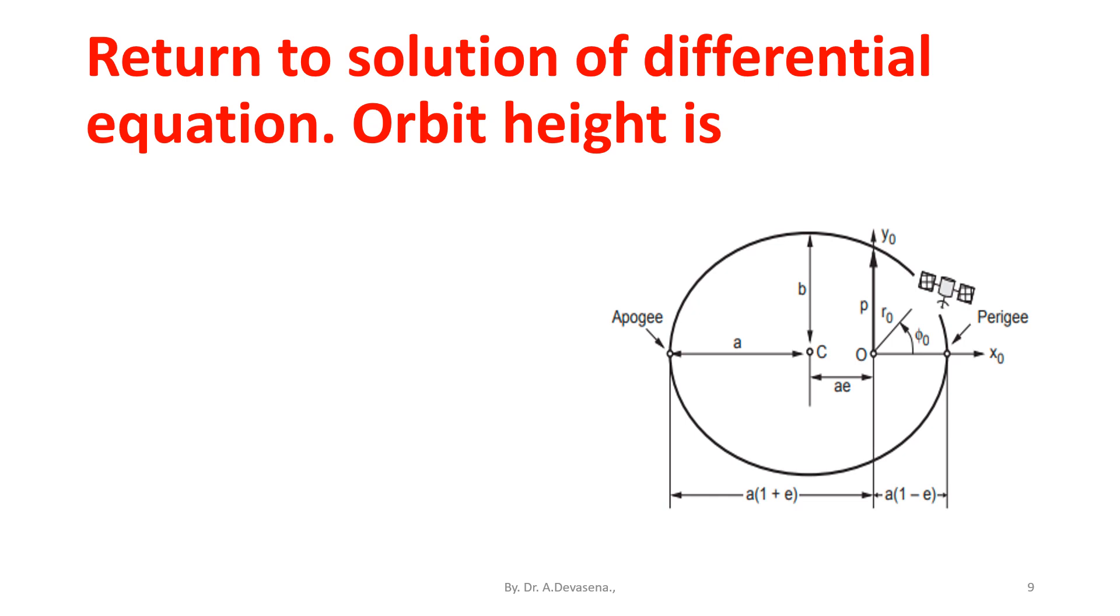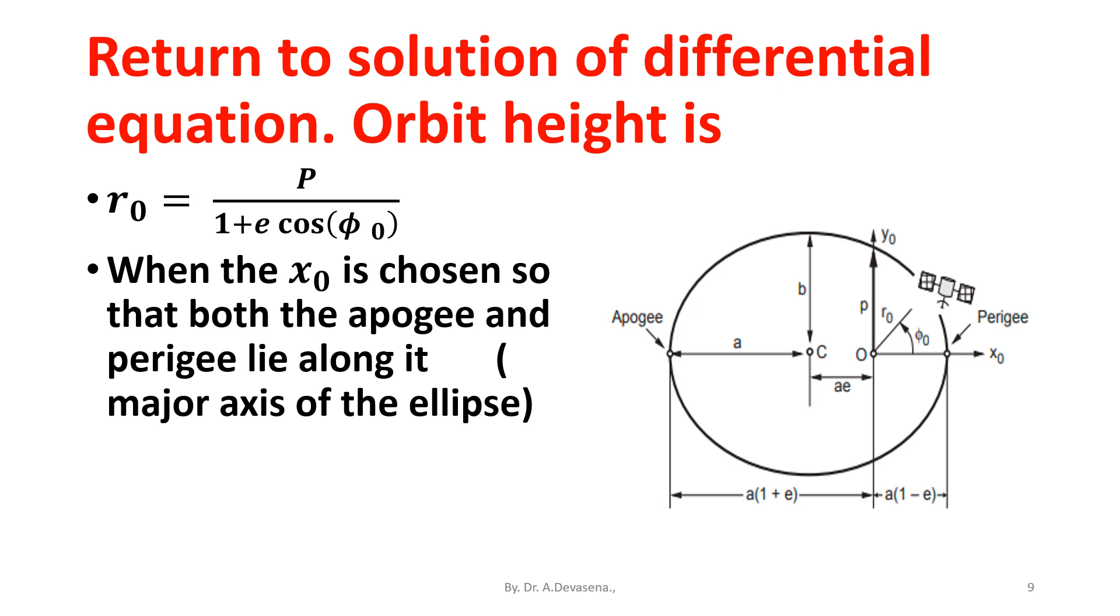Return to solution of differential equation. The orbit height R0 is equal to P divided by 1 plus e into cos of phi 0, when X0 is chosen so that both the apogee and perigee lie along it, the major axis of the ellipse.